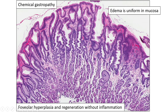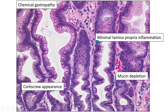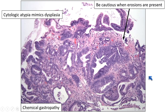In chemical gastropathy, we see a diffuse alteration in epithelial cell morphology and architecture without much inflammation to explain those changes. The pits are elongated and lined by cells that are cytoplasmically depleted with nuclear enlargement and scattered mitotic activity. Most of the time you can appreciate maturation of this epithelial cell atypia as you move to the surface of the mucosa. You can get into trouble when there are erosions in areas of extreme repair, because that induces even more cytologic abnormalities, as you can see here.